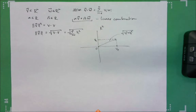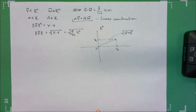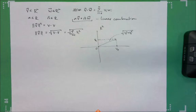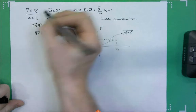You guys have any questions? The question was: can you do a dot product between vectors of different dimensions? That's a very logical question. The answer is no — it's not really defined. It's only defined for vectors from the same vector space.